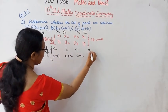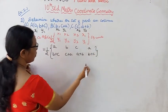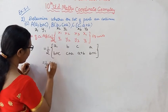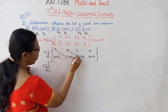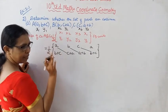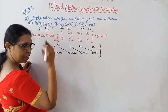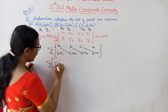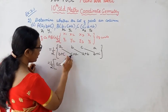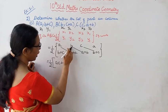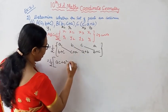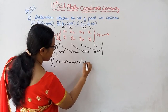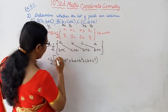So substituting: X1 = A, Y1 = B+C; X2 = B, Y2 = C+A; X3 = C, Y3 = A+B. Expanding downward: A into C+A, B into A+B, C into B+C, and then the downward products.